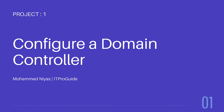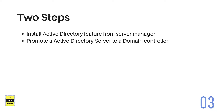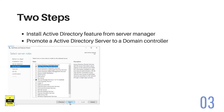We have a running Azure virtual machine with Windows Server 2019 and we need to configure Active Directory. In this video we are going to see how to configure a Windows Server as an Active Directory. It's a two-step process. The first step is to install the Active Directory Domain Services feature. Windows Server provides many features like Active Directory Domain Services, Active Directory Certificate Services, web services, and more.